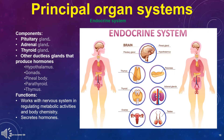The endocrine system components are the pituitary gland, adrenal gland, thyroid gland, and other ductless glands that produce hormones, such as the hypothalamus, gonads, pineal body, parathyroid, and thymus. Its functions are: works with the nervous system in regulating metabolic activities and body chemistry, and secretes hormones.